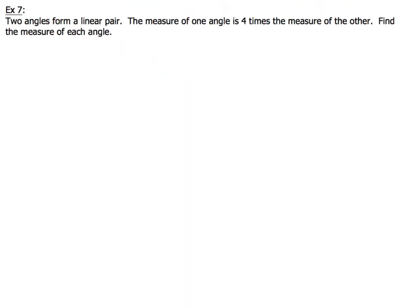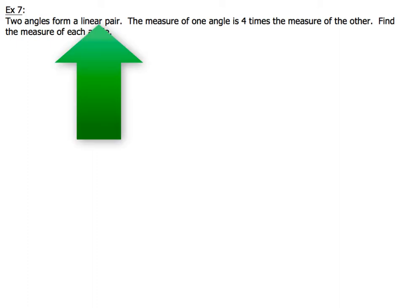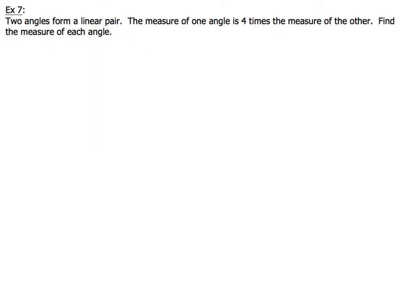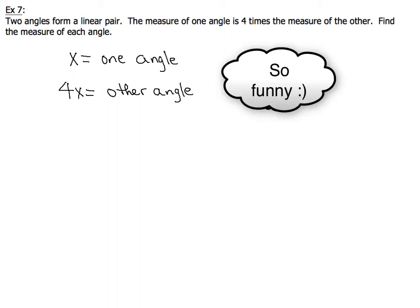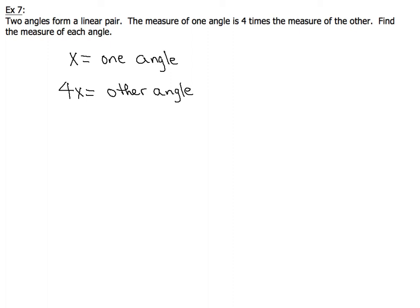Let's take a look at Example 7. Two angles form a linear pair. The measure of one angle is four times the measure of the other. Find the measure of each angle. When we think about this problem, we recognize the word linear pair, which means the two angles add up to 180. The key sentence is that one angle is four times the other, so we write: x equals one angle, and 4x equals the other angle.